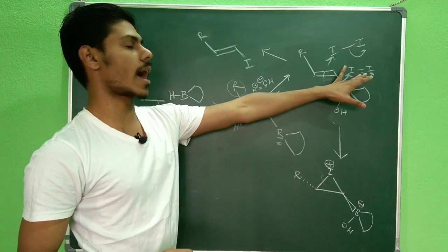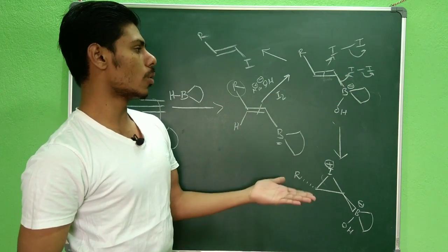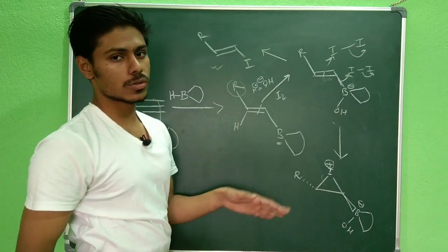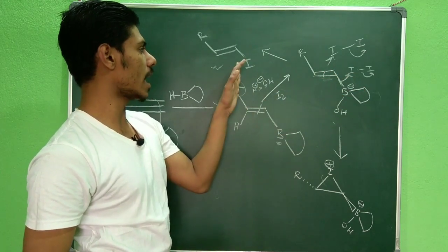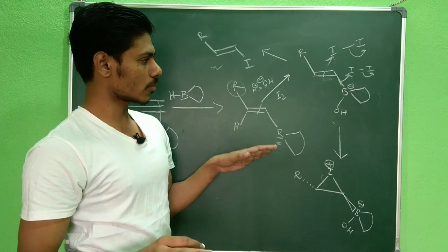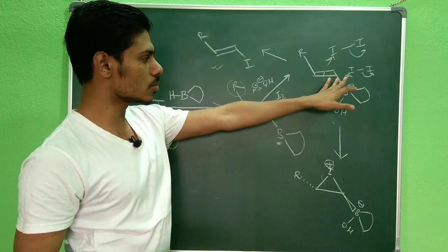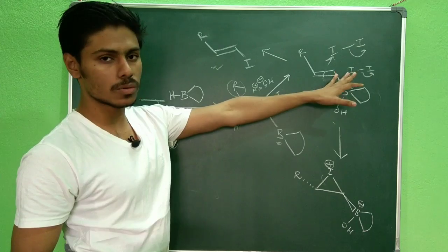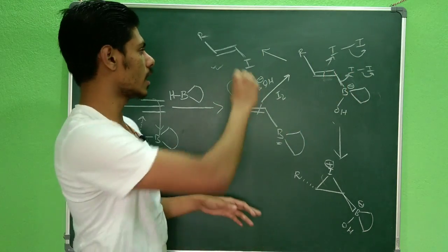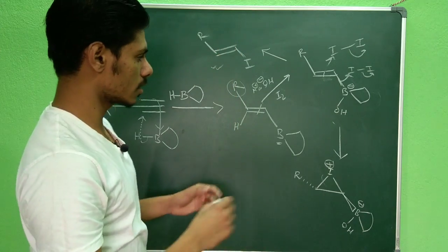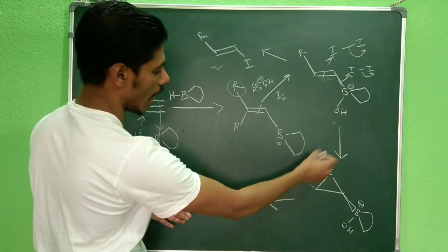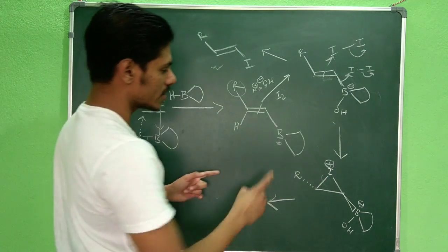The evidence against that simple mechanism is that the rate at which iodine disappears is actually faster than the rate at which the product is formed. This means the disappearance of iodine and the production of the product are not occurring in the same step. Therefore, that mechanism must be discarded, because if it were correct, the rate of iodine disappearance and product formation would be identical.